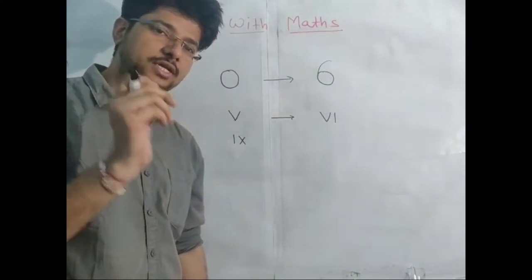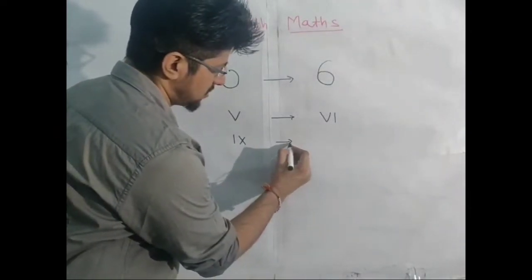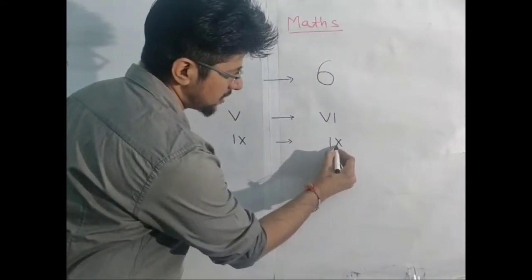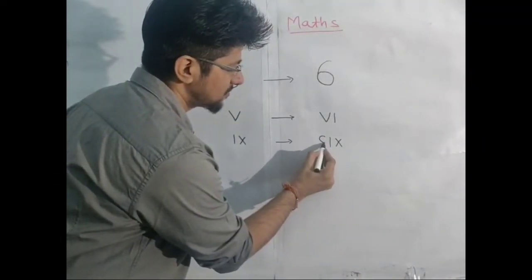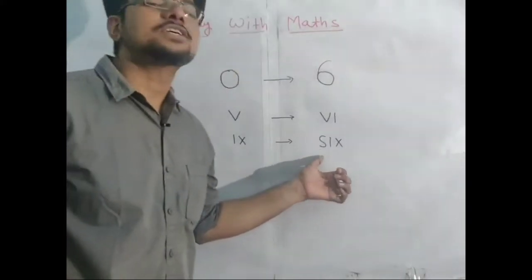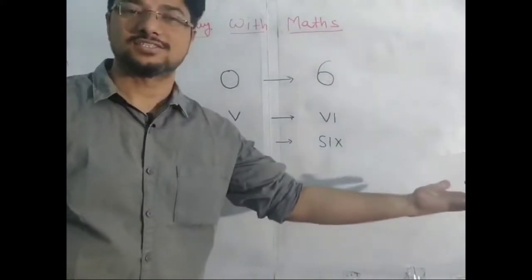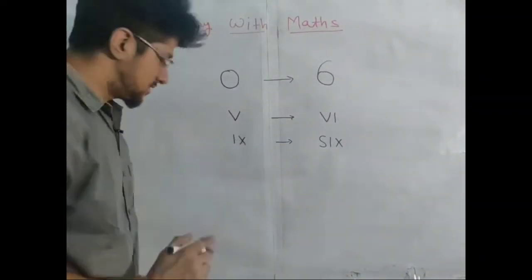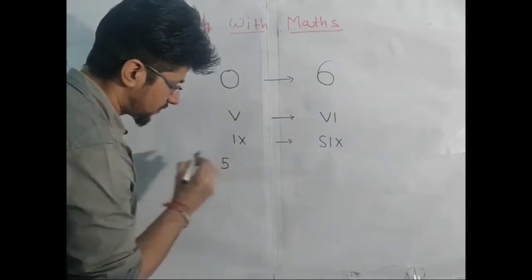Let's crack the code! Take what is given and make a curved line. Now it spells S-I-X — six in English! Clear? Another trick: you have this five.